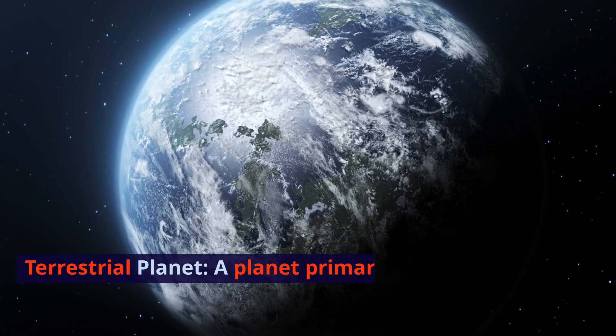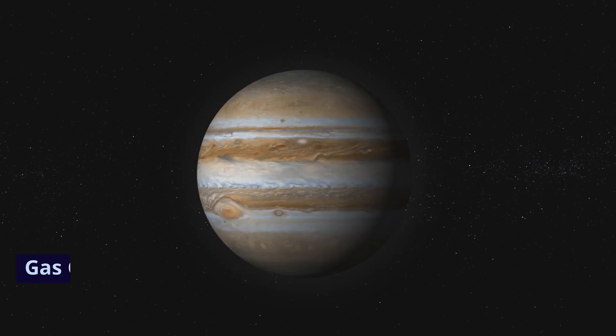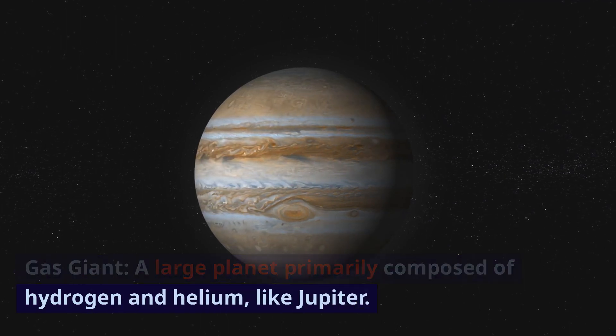Terrestrial planet. A planet primarily composed of rock and metal, like Earth. Gas giant. A large planet primarily composed of hydrogen and helium, like Jupiter.